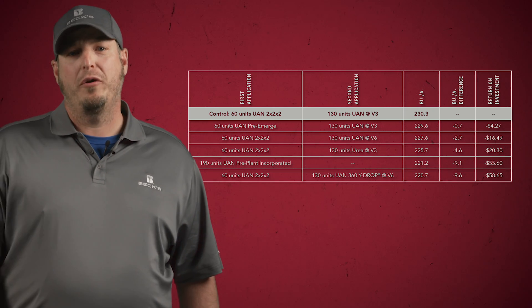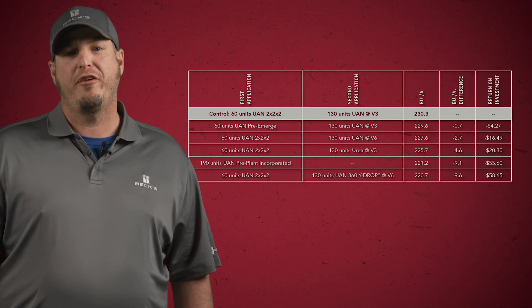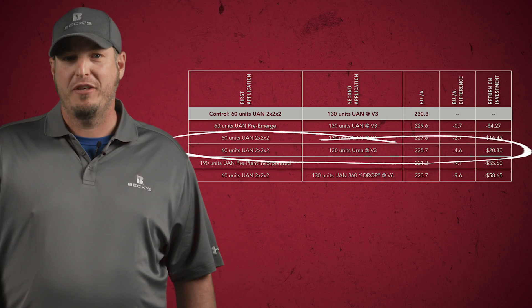In 2022, we set up to evaluate various nitrogen applications, timings, and how they affect corn yields. Our control treatment was the standard PFR proven practice of 60 units two-by-two-by-two at planting, followed by a V3 side dress application for a total of 190 units. We tested five additional treatments, all totaling 190 units of nitrogen. In 2022, 60 units of UAN via a two-by-two-by-two split application followed by an application at V3 was the most profitable nitrogen system. Looking past the first planting application, the second treatments we examined for in-season decision making included: a normal V3 side dress, a V3 urea application, a V6 side dress, and a Y-drop application at V6. We want to understand why those alternatives didn't perform as well as the normal V3 side dress.